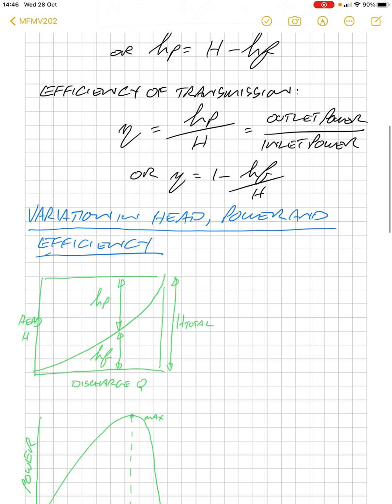From this, we can also look at what efficiency we have in the system. The efficiency is the outlet power divided by the inlet power.